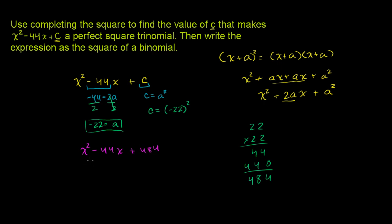So if we were to rewrite this as x² - 44x + 484, then this is a perfect square trinomial. Or we could write it like this: x² - 2 times, or maybe I should write it this way, plus 2 times (-22)x plus (-22)².